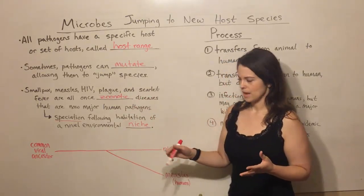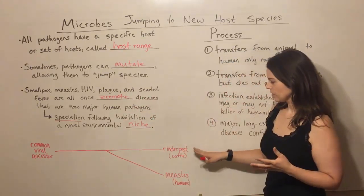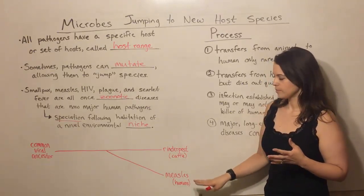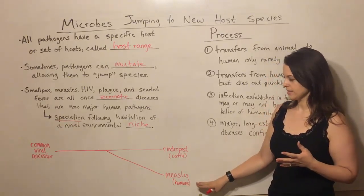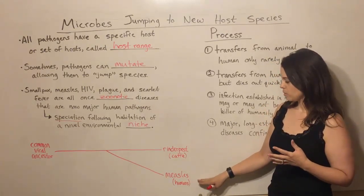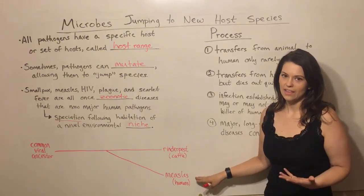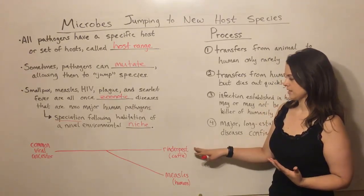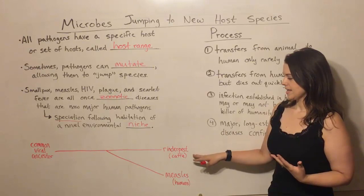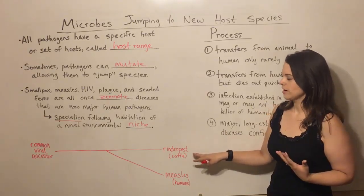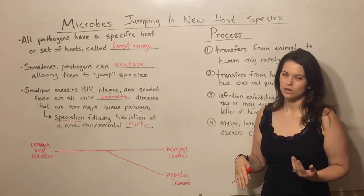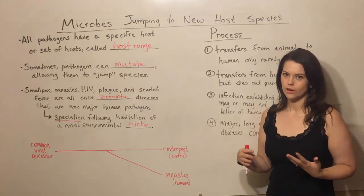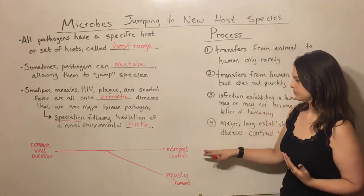As an example, there is rinderpest and measles. I'm sure you've heard of measles, which infects humans, but the most closely related pathogen to measles is actually rinderpest, which is a closely related pathogen that infects cattle, buffalo, and a few other types of animals.